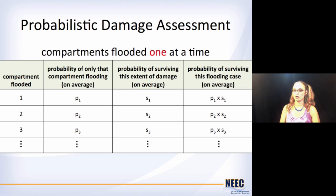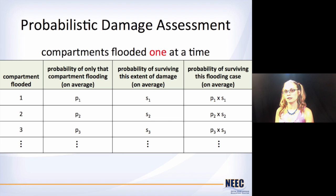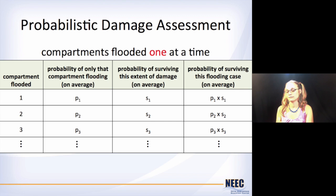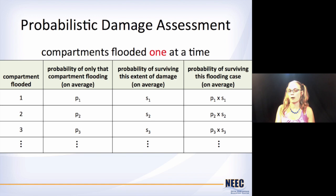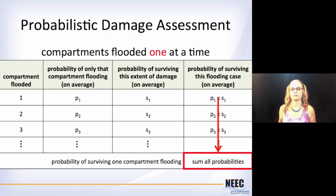To do this for your ship, you're going to make big giant tables. The first thing is to look at compartments flooding one by one. Look at compartment one: figure out the probability that only compartment one is going to flood, and figure out the probability of surviving compartment one being flooded. If you multiply those two together — P1 times S1 — that's the probability that you will survive compartment one being flooded. Do the same thing for compartment two, compartment three, however many you've got. Add all those together and that's the probability that you will survive any one compartment being flooded.